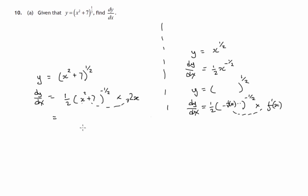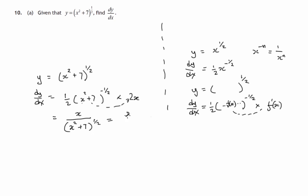Now let's simplify this a bit. A half of the two just gives us one, a factor of one, so we can ignore those two. There's something to a negative power, so let's make it a fraction — the x will be on the top, and because of the negative power it becomes 1 over the same thing to the positive power, so it goes to the bottom of the fraction. We're using x to the negative n equals 1 over x to the n. So we get x over x squared plus 7 to the half, which is the square root of x squared plus 7.